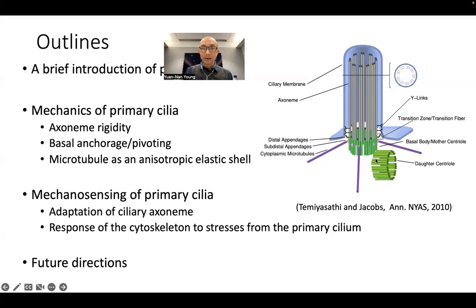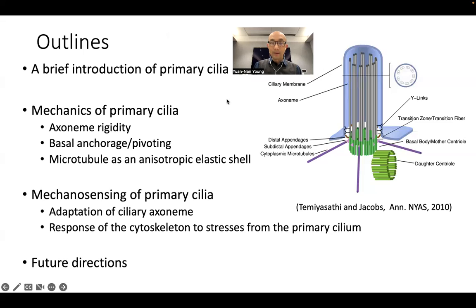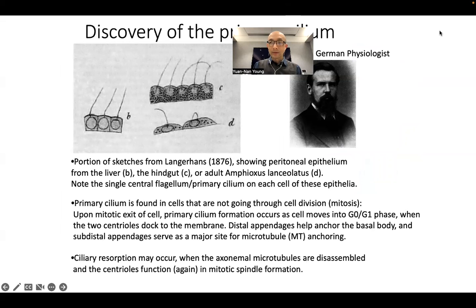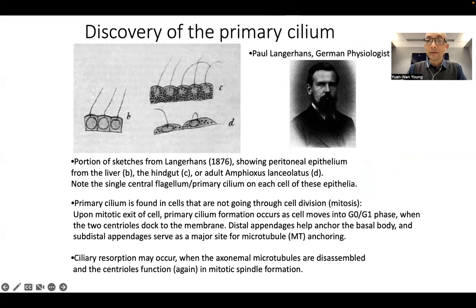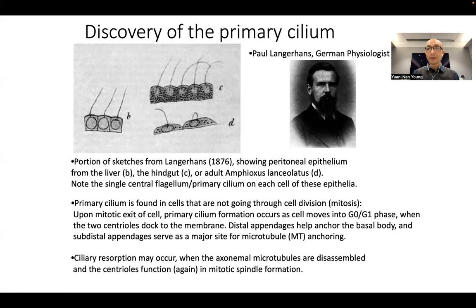The primary cilium is now a quite well-known organelle that was first reported by Paul Langerhans, a German physiologist, more than 100 years ago. Here are some of his drawings of primary cilia from three types of cells. It's now known that primary cilia can be found in almost all cell types as soon as they are not in the mitotic cycle. It's also found that primary cilia could be resorbed — the axonemal structure could actually disassemble and move back around the nucleus to perform duties forming spindles and facilitating cell division.